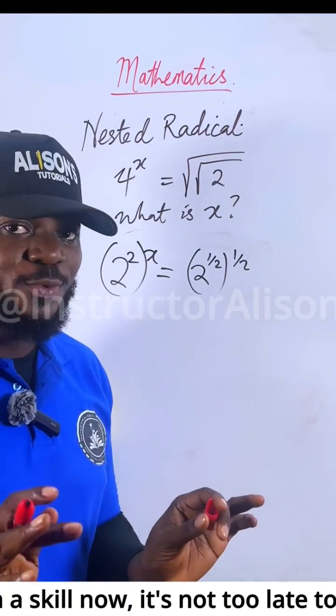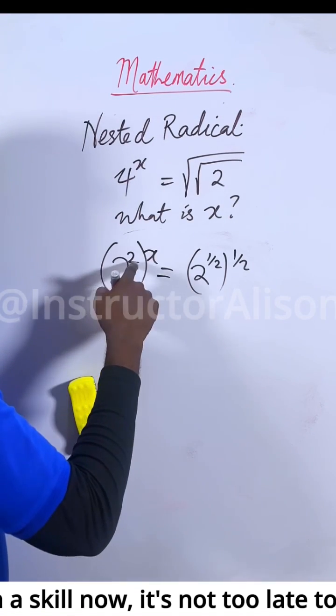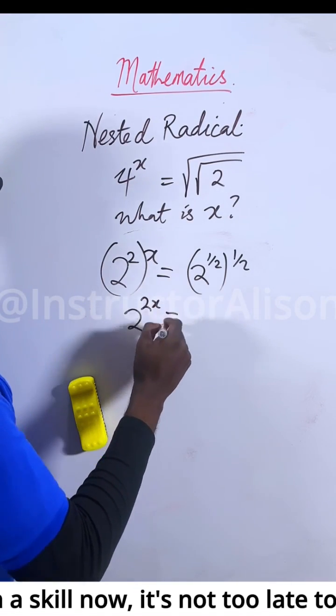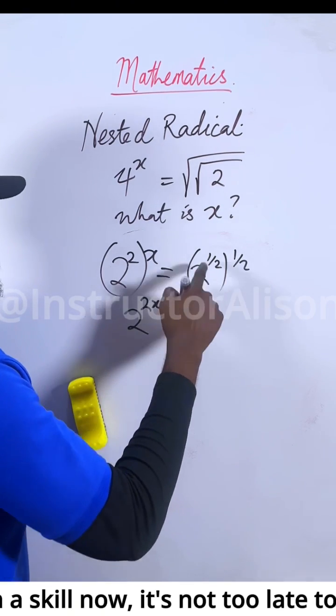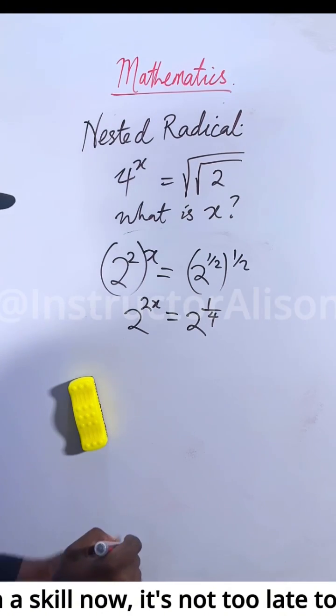All right, let's clear off this one. 2 times x will be 2x equal to 2 to the power of 1 times 1, which will be 1. 2 times 2 gives us 4. Whenever the bases are the same, equal the power. So I have 2 to the power of x equal to 2 to the power of 1 over 4.